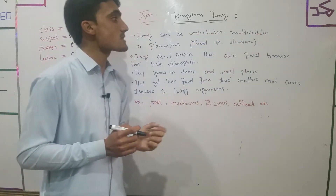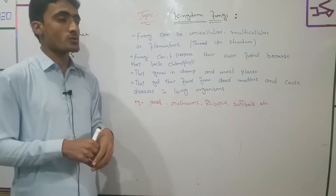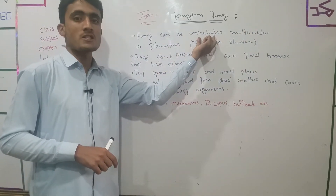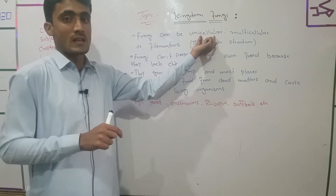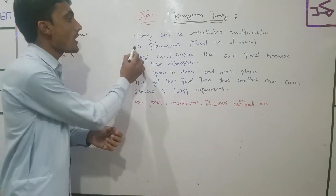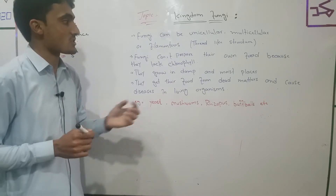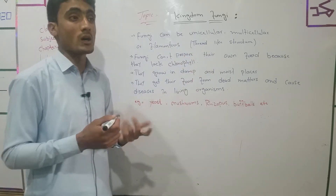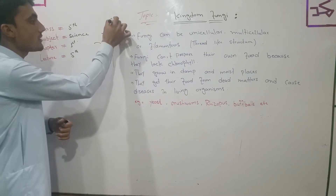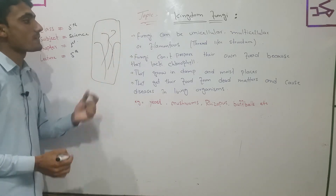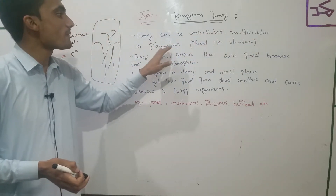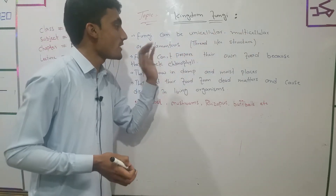Unicellular means one cell — one fungus can be a unicellular organism. Multicellular means the organism is made of many cells. And filamentous means a thread-like structure — fungi can have a filamentous, thread-like form.